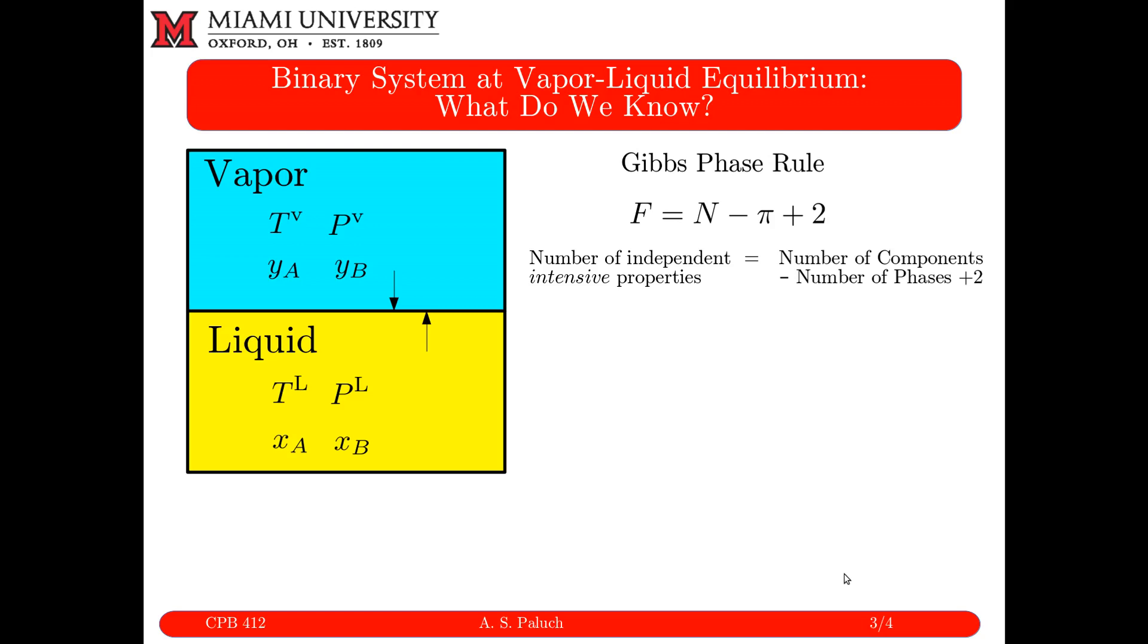So if I think about the Gibbs phase rule, the number of intensive independent properties that need to be specified to fix unambiguously the thermodynamic state of my system is F = N - π + 2. N is the number of components, π is the number of phases, and 2 is 2. So if I have a binary system, N is 2. For vapor-liquid coexistence, I have two phases, so N minus π is 0 plus 2. So if I have a binary system at vapor-liquid coexistence, I need to specify two intensive thermodynamic properties to fix the state of my system.